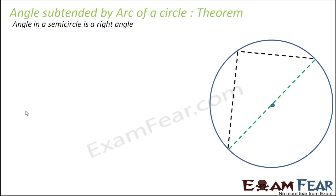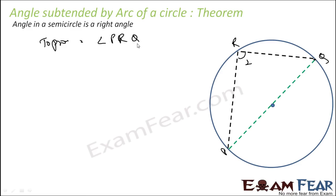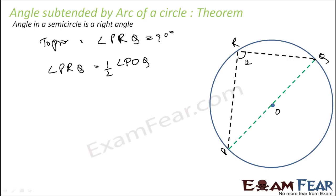Let us take another important theorem: the angle in a semicircle is a right angle. If there is a diameter, you get a semicircle, and for any point R on the semicircle, angle PRQ will be 90 degrees. We know angle PRQ is half of angle POQ by the central angle theorem. Since POQ is a straight line (diameter), angle POQ is 180 degrees, so angle PRQ equals 90 degrees.